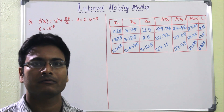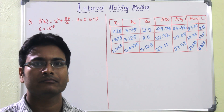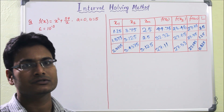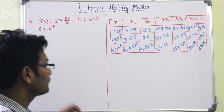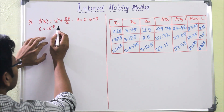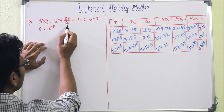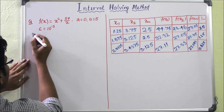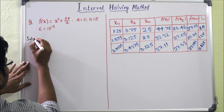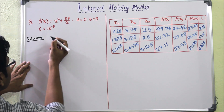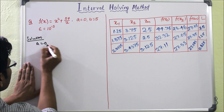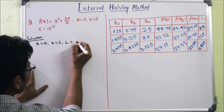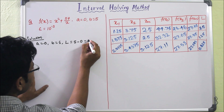In this video we will solve the problem and find the minimum point of the given function using the Interval Halving Method. The problem is f(x) = x² + 54/x, with a = 0 and b = 5. This is a unimodal function. Here a = 0, b = 5, and the length of the interval is 5 minus 0, which is 5. So the initial length is 5.